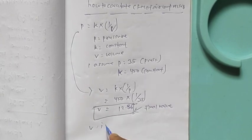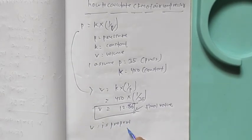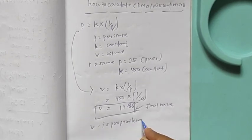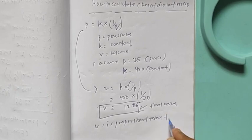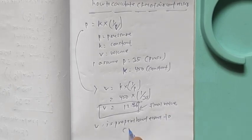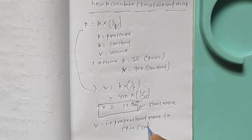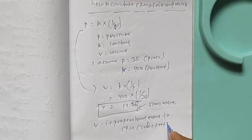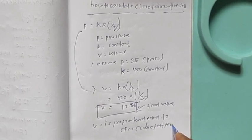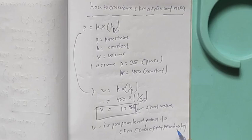V is proportional equal to CFM, cubic feet per minute.